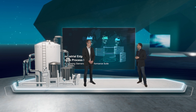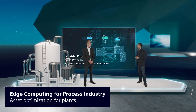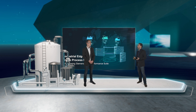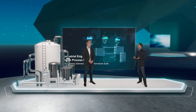It seems obvious that Industrial Edge plays a decisive role in the digitalization of process plants. It complements our existing process automation portfolio and is ideal for implementing additional functionalities in brownfield and greenfield scenarios. But how can we really apply Industrial Edge?